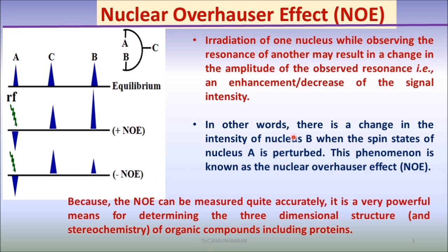In other words, there is a change in the intensity of nucleus B when the nuclear spin states are perturbed. This phenomenon is known as the nuclear Overhauser effect.